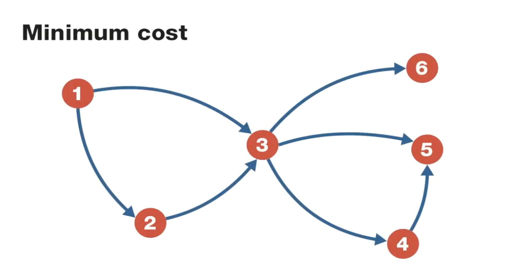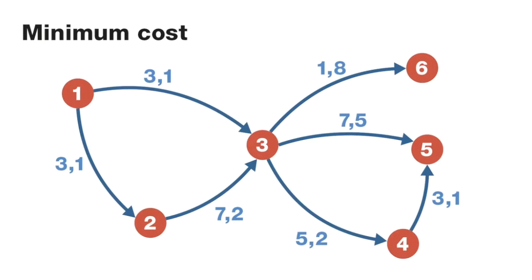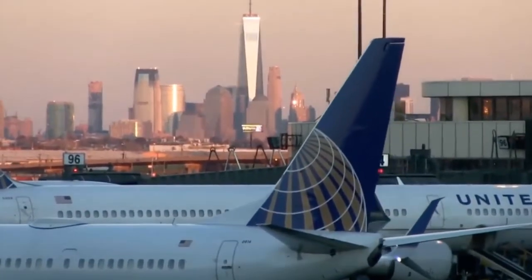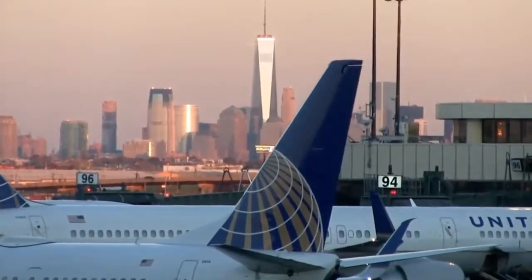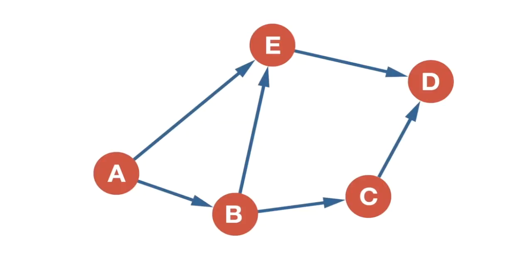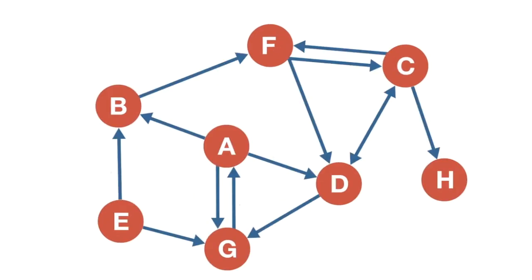The minimum cost flow problem arises when you have a lot of things to move through a network and the capacity is forcing you to move things away from their cheapest path. The optimisation problem of crew scheduling is first represented as a directed graph.